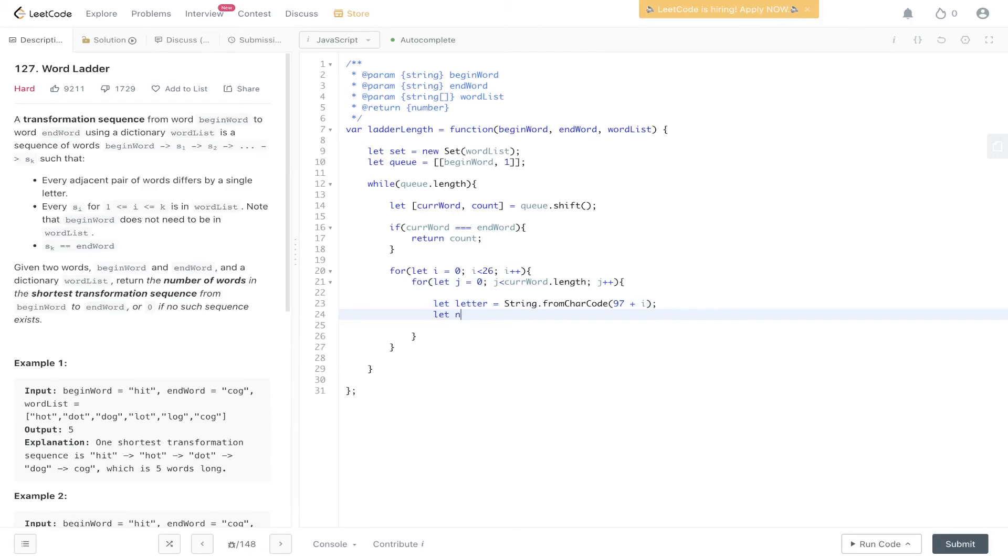Then we just need to slice that in. So new word will be current word dot slice. We're going to slice from 0 to j. Then we're going to insert that letter and then we're going to add the rest of current word to this new word. So j plus 1.